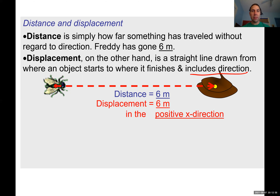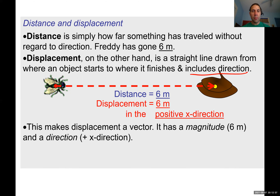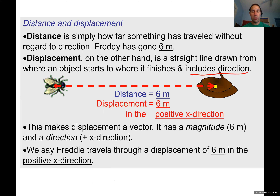In Freddy's case, while the distance is six meters, the displacement is six meters in the positive x direction. This makes displacement a vector — vectors have both magnitude and direction. Here the displacement vector has a magnitude of six meters in the positive x direction.